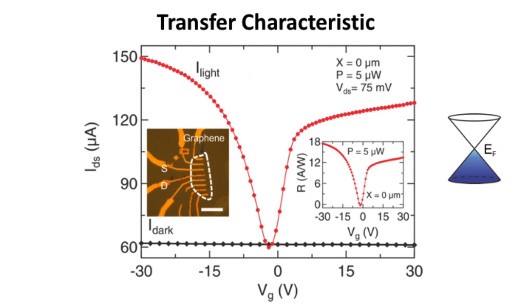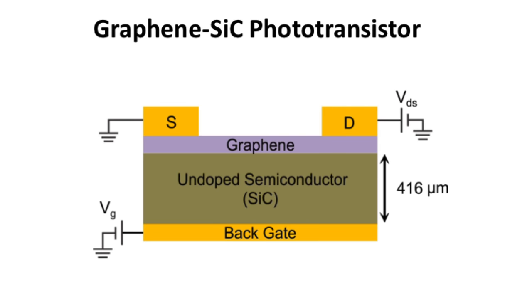When light comes in, it creates carriers in the underlying substrate — in this case, silicon carbide — and it actually modulates the electric field acting on graphene, because we already have a background electric field from a voltage applied in the back. We call this a photo transistor, or a photo-actuated or photo-modulated transistor.